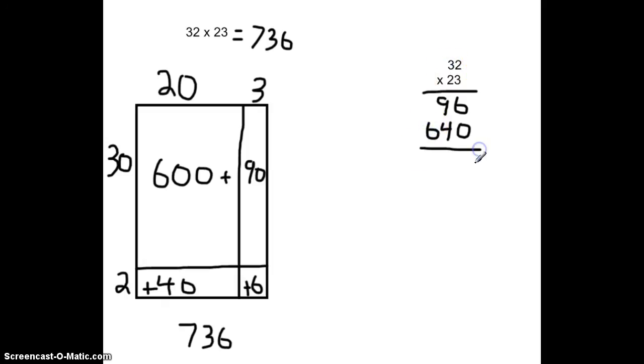Adding these all together, we get a 6. 90 plus 40 is 130. And we carry 100 and 600. 100 plus 100 is 736. So we still get the same numbers.